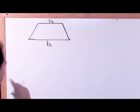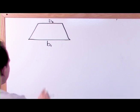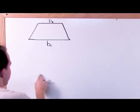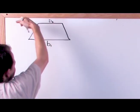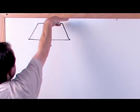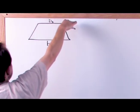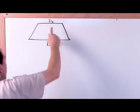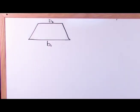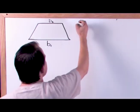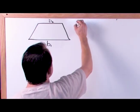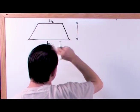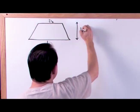You need to distinguish the two bases because in a triangle you only have one base, but a trapezoid is kind of like a triangle with the top cut off, so you have two bases — one called B1 and one called B2. The other important number you need to know about a trapezoid in order to calculate the area is the height.